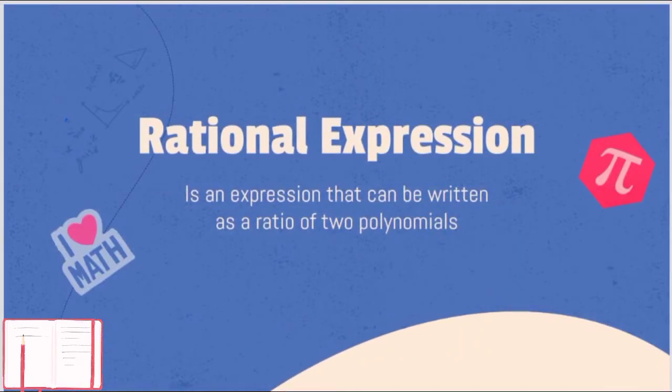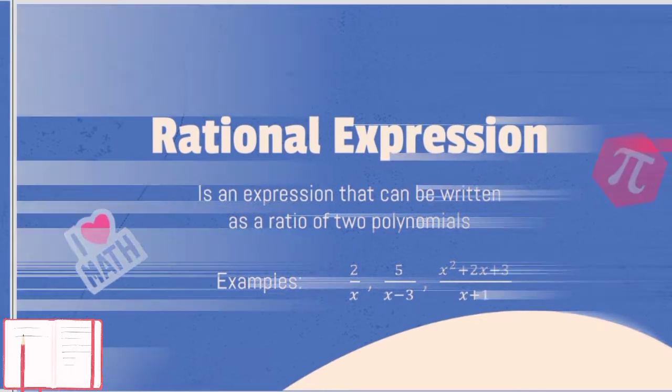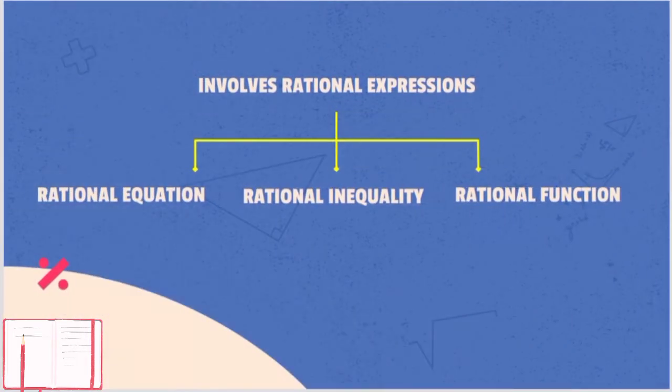Rational expression is an expression that can be written as a ratio of two polynomials. Here are the following examples: 2 over x, 5 over x minus 3, and x squared plus 2x plus 3 all over x plus 1.